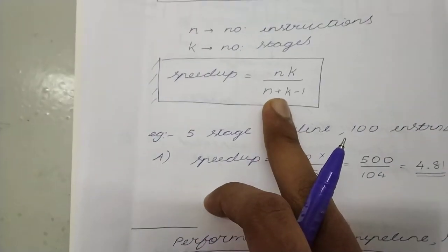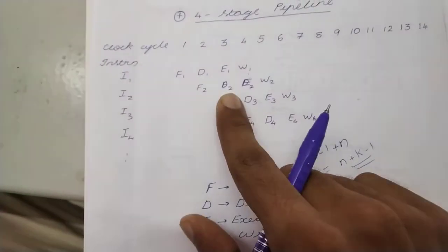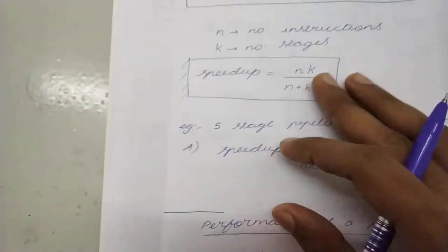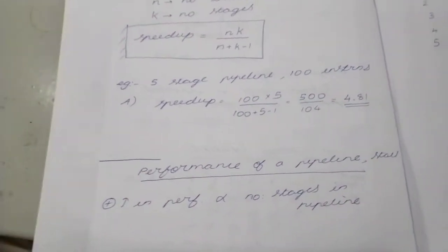So that is what we have written here, n plus k minus 1. See how that comes? It is from here, very basic. So if you put those numbers in, we will get the final speedup.